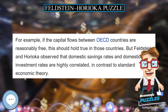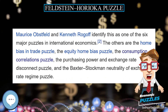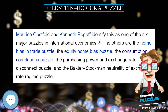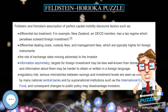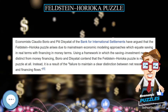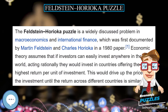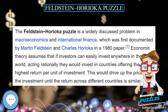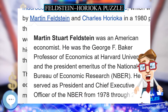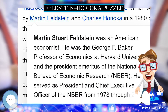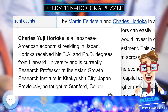Economic theory assumes that if investors can easily invest anywhere in the world, acting rationally they would invest in countries offering the highest return per unit of investment. This would drive up the price of the investment until the return across different countries is similar. The discussion stems from the economic theory that capital flows act to equalize the marginal product of capital across nations — money flows from lower to higher marginal products until the increased investment equalizes the return with that obtainable elsewhere.